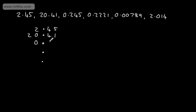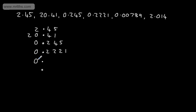For 0.245, we're going to have 0 units, 2 tenths, 4 hundredths, and 5 thousandths. For 0.2221, we have 0 in the units, 2 in the tenths, 2 in the hundredths, 2 in the thousandths, and 1 in the ten-thousandths. For 0.00789, we've got 0, 0, 0, then 7, 8, 9. And finally, 2.014 gives us 2 in the units, 0 in the tenths, 1 in the hundredths, and 4 in the thousandths.